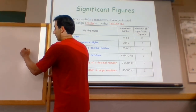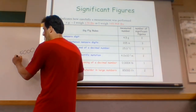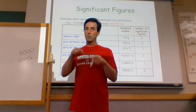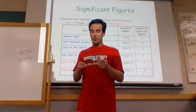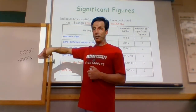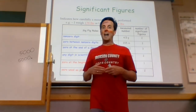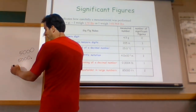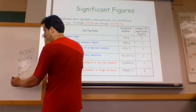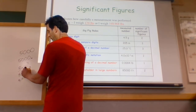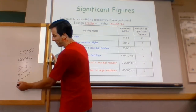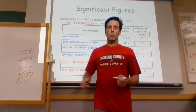5,000 written as just 5,000 is 1 sig fig. If I write 5,000 with a decimal point — 5,000. — the zeros to the right of my non-zero number are significant because the decimal is present, so that's 4 sig figs. So what if I needed exactly 3 sig figs? The answer is scientific notation. I can write 5 × 10³ for 1 sig fig, 5.0 × 10³ for 2 sig figs, or 5.00 × 10³ for 3 sig figs. In scientific notation I have complete control.